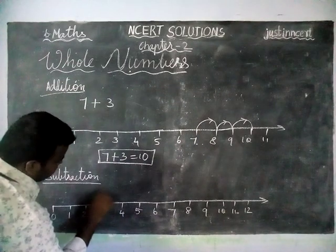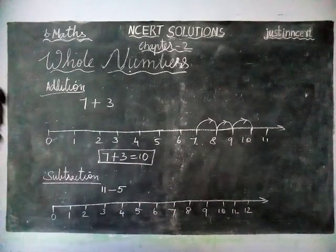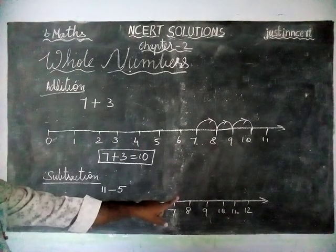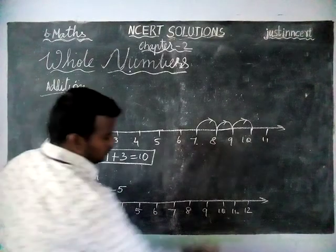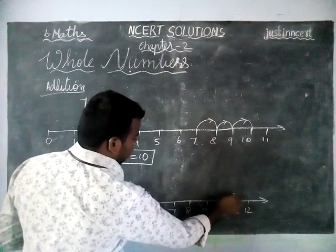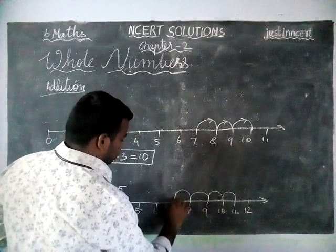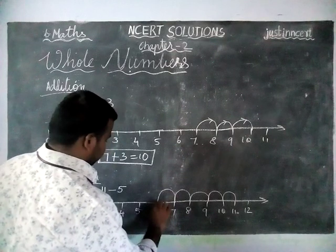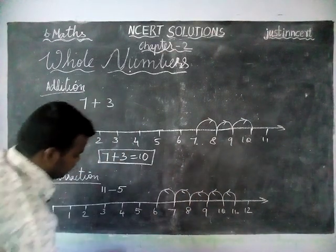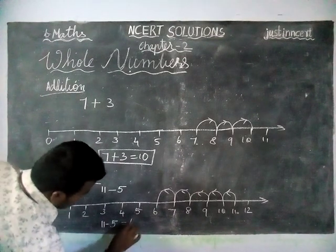We are going to subtract 11 minus 5 and check it on the number line. Starting from number 11, when we are subtracting, we have to move to the left-hand side. From 11, we move left 5 steps — 1, 2, 3, 4, 5. We reach the number 6. So the answer is 11 minus 5 is equal to 6.